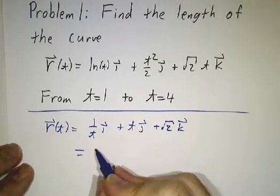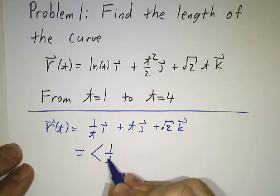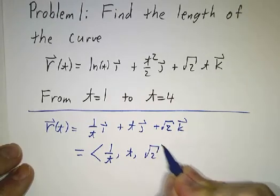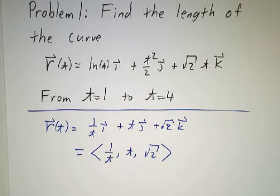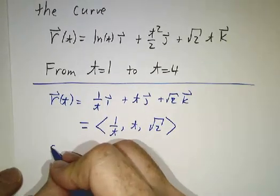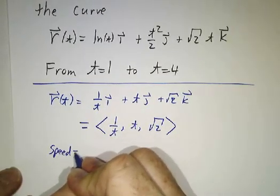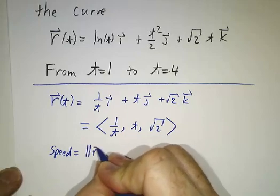Or we can write it in the alternate notation as 1 over t, t, square root of 2. So that's the velocity, and our speed is the length of the velocity.